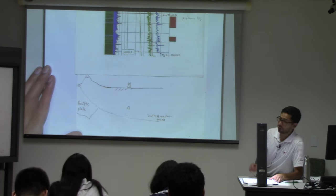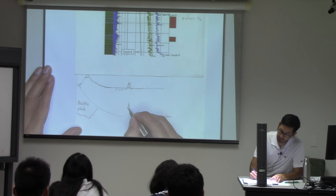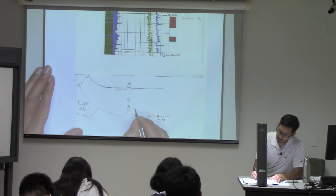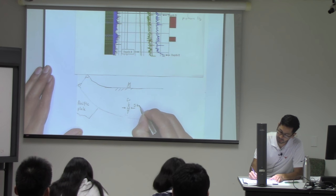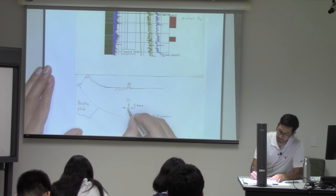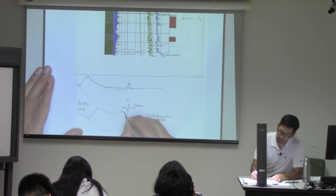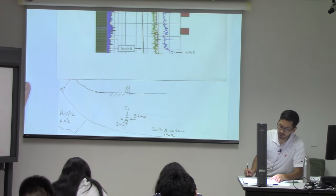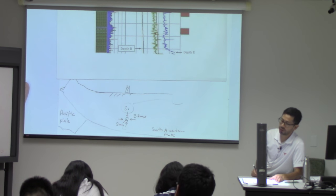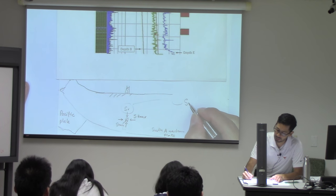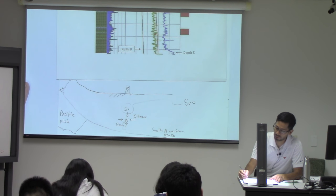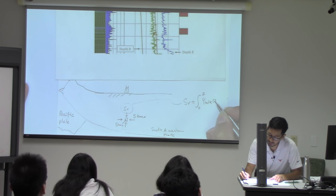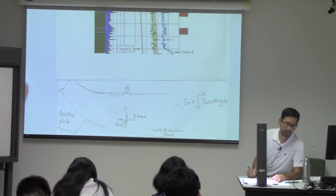If we wanted to calculate the state of stress at this point, here we'll have vertical stress; here in this direction — and I'm going to explain why — the maximum principal stress; and perpendicular to the plane, we're going to have the minimum principal stress. We know how to calculate vertical stress. The equation is rho bulk as a function of z, times gravity, times differential z. Very easy.